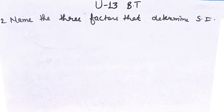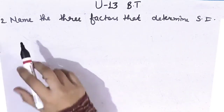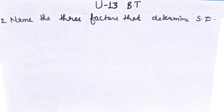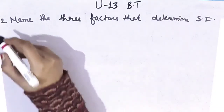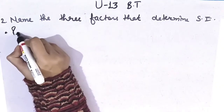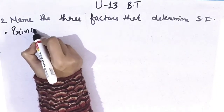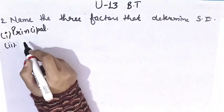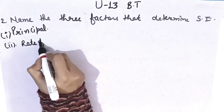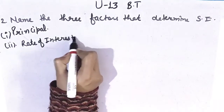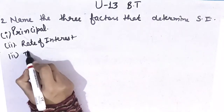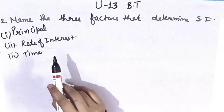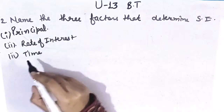Now read the statement of the second sum: name the three factors that determine simple interest. The formula for simple interest uses: principal, rate of interest, and time. So the three factors are — first factor is principal, second factor is rate of interest, and third factor is time. These three factors tell us about simple interest.